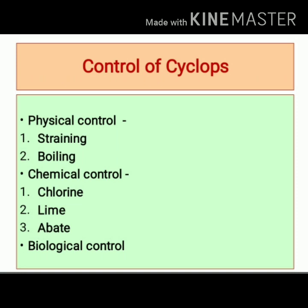Control of Cyclops includes physical control, chemical control, and biological control. Physical control includes straining and boiling of water. Chemical control includes use of chlorine, lime, or abate. Biological control includes use of fish which feeds on Cyclops.